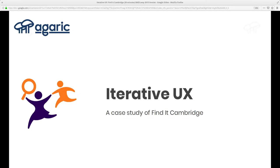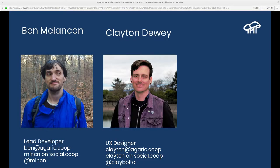Welcome everyone to Iterative User Experience Design. This is a case study of a website called Find It Cambridge. This is Clayton Dewey, who at some point joined the GARC and took over managing the project, but it started six years ago. We're a six-person tech cooperative. We use open source software to build what we call the digital commons — tools out there for public and community benefit. And Find It Cambridge is a great example of it.